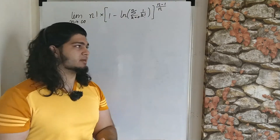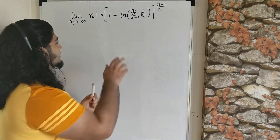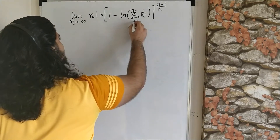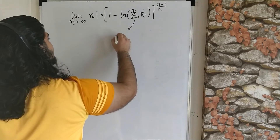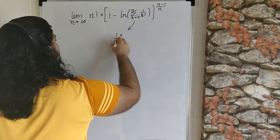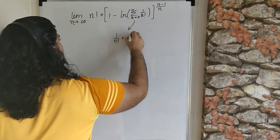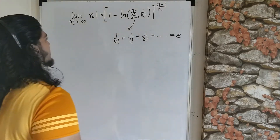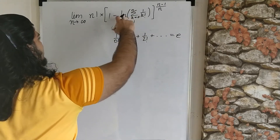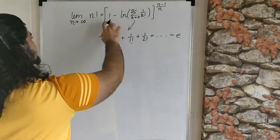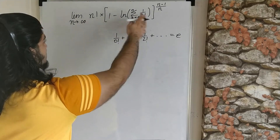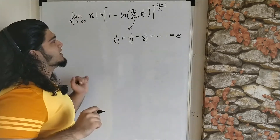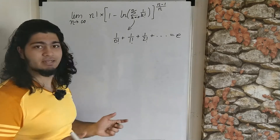Firstly we have n factorial, and over here we have 1 minus ln of this sum. As n goes to infinity, this sum basically becomes 1 plus 1 over 0 factorial plus 1 over 1 factorial plus 1 over 2 factorial plus dot dot dot, which equals e. So as n goes to infinity this entire thing approaches ln of e, which is 1, making the bracket approach 1 minus 1 equals 0. So we have an infinity times 0 situation. Since we are dealing with a discrete variable, we can't use L'Hôpital's rule in any form.